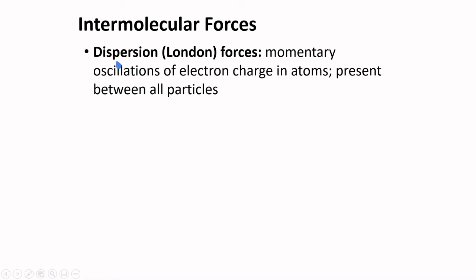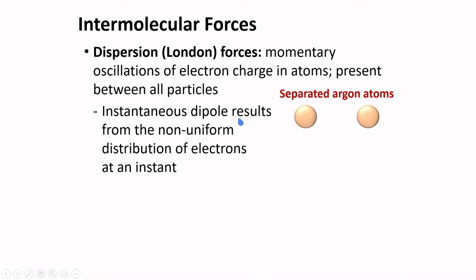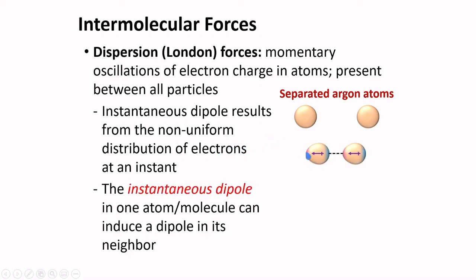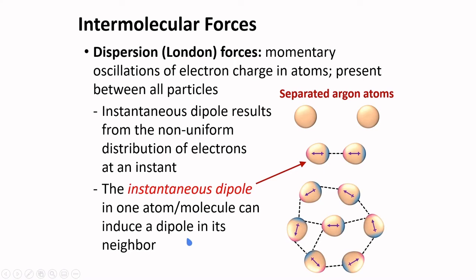The last type of intermolecular forces are dispersion forces, or London forces. These are momentary oscillations of electron charge in atoms and are present between all particles. An instantaneous dipole results from non-uniform distribution of electrons at an instant. Separated argon atoms can form instantaneous dipoles as they come close to each other, and the instantaneous dipole in one atom or molecule can induce a dipole in its neighbor. Hence attraction can result even in non-polar substances.